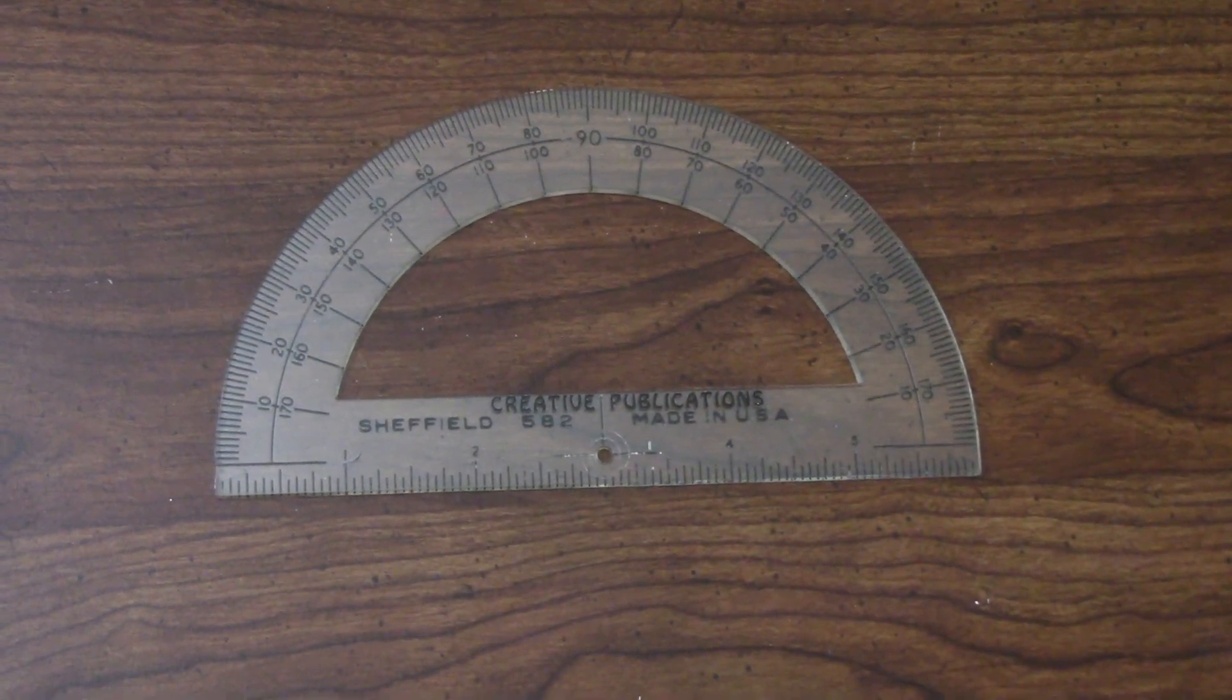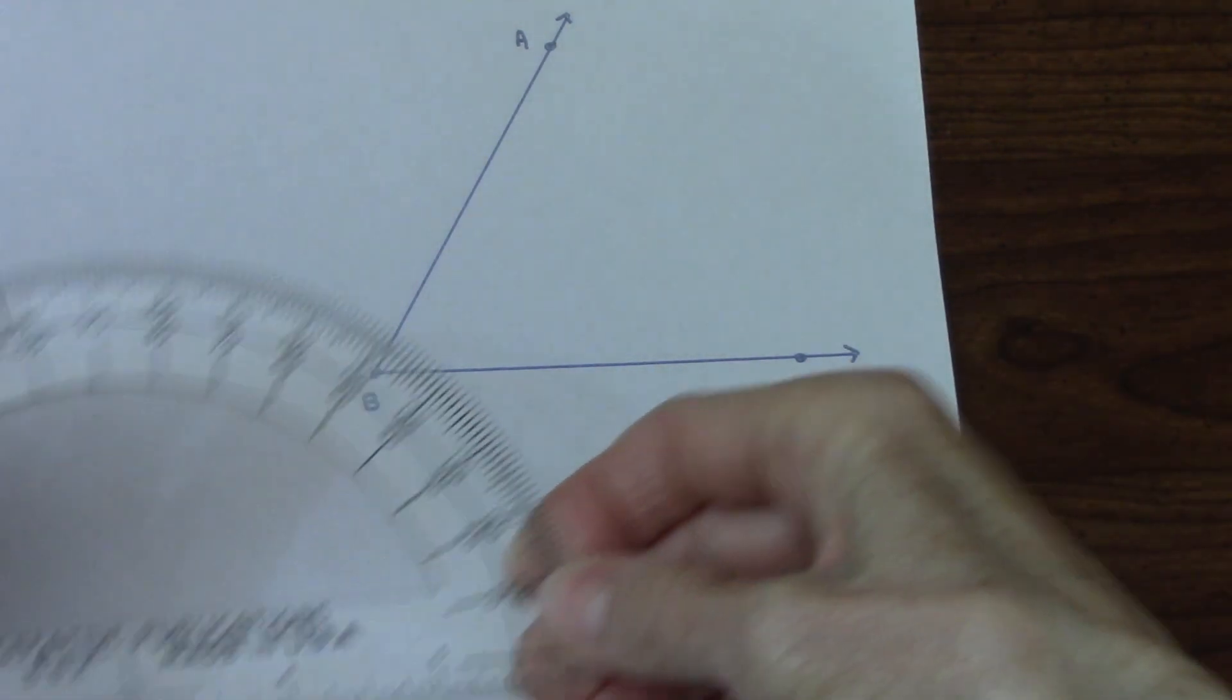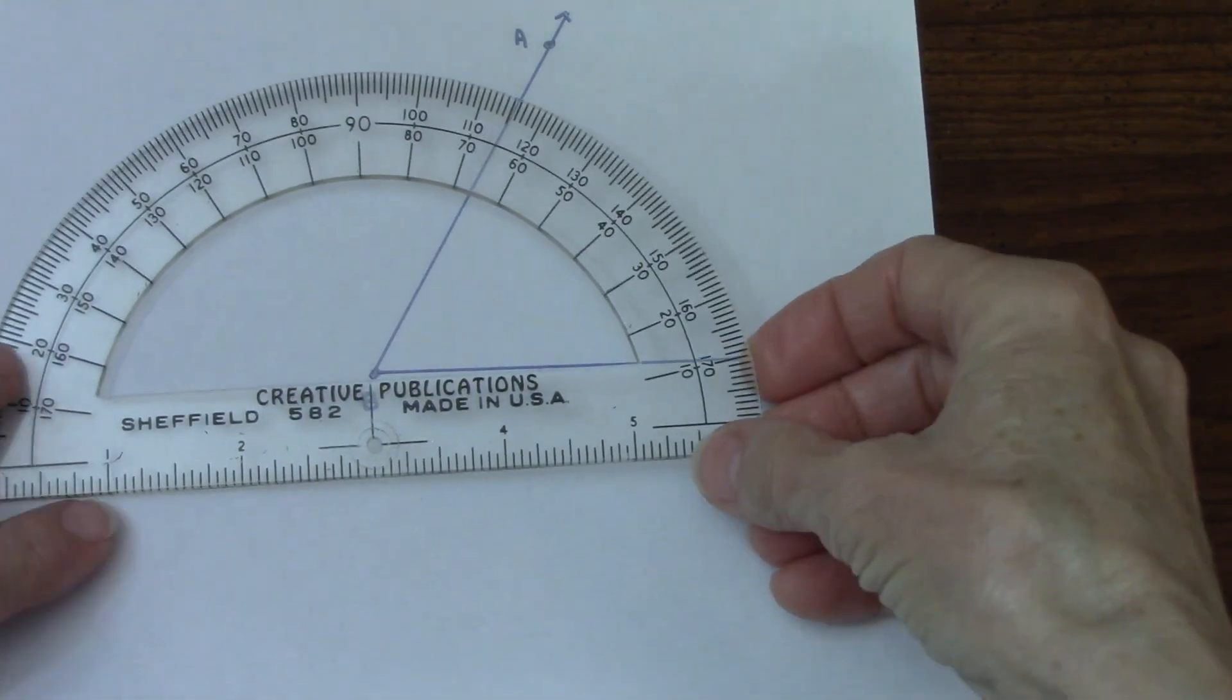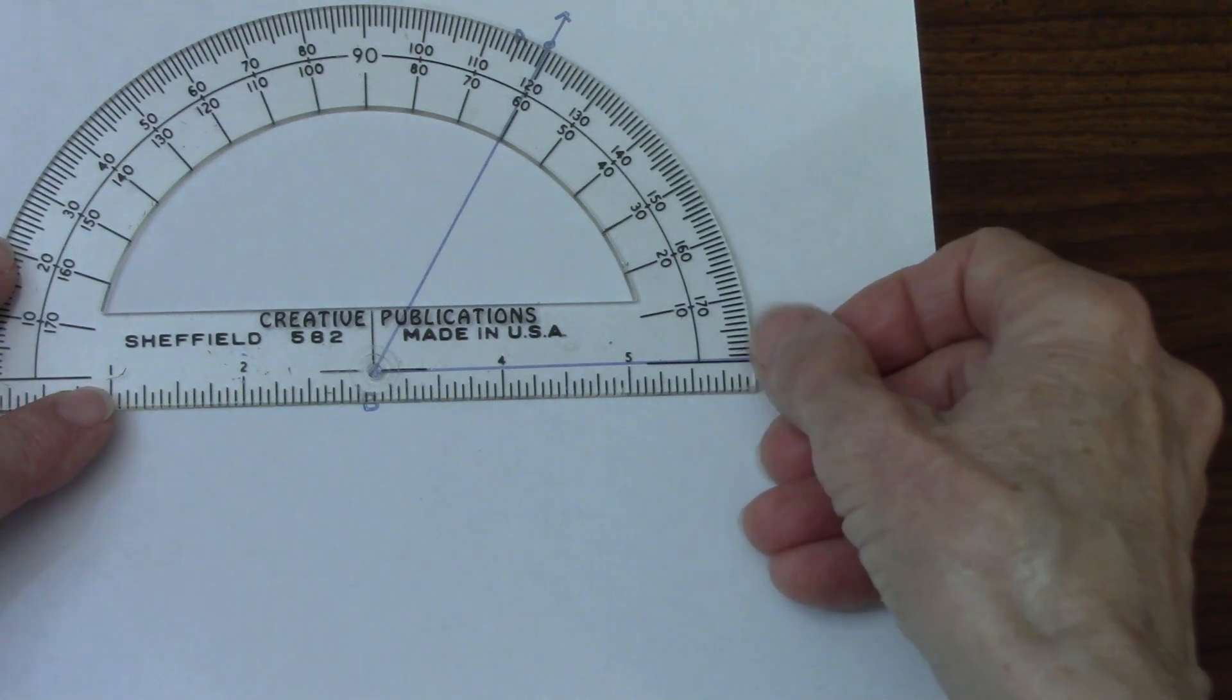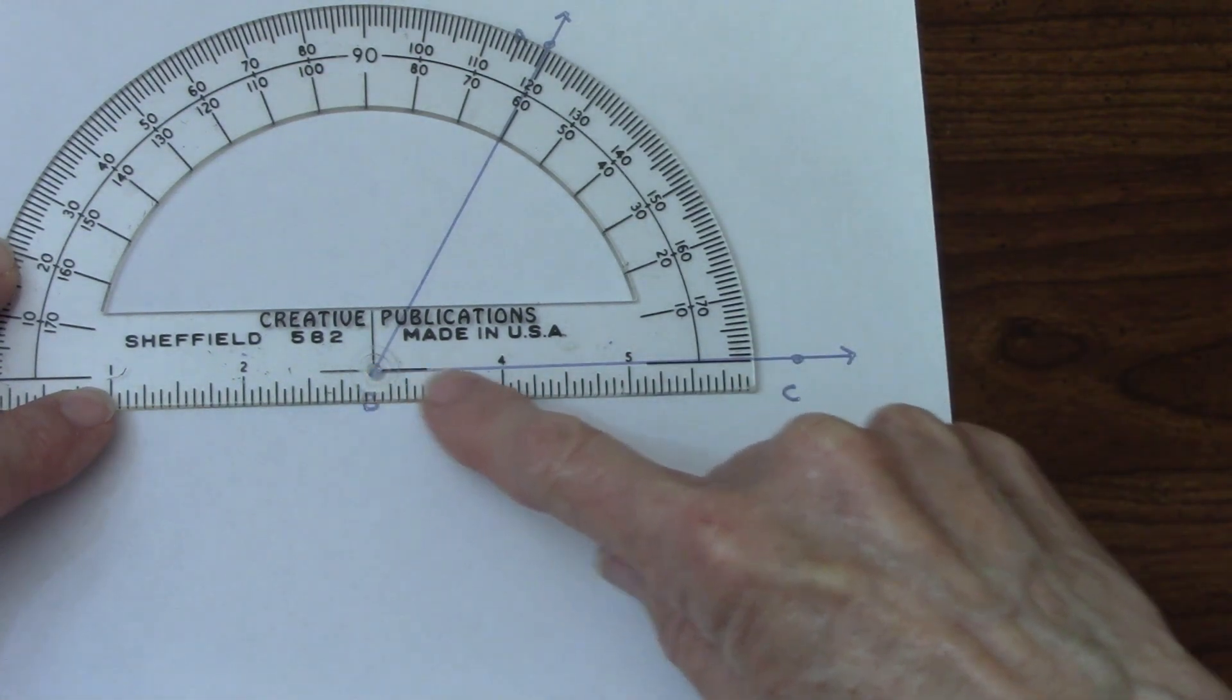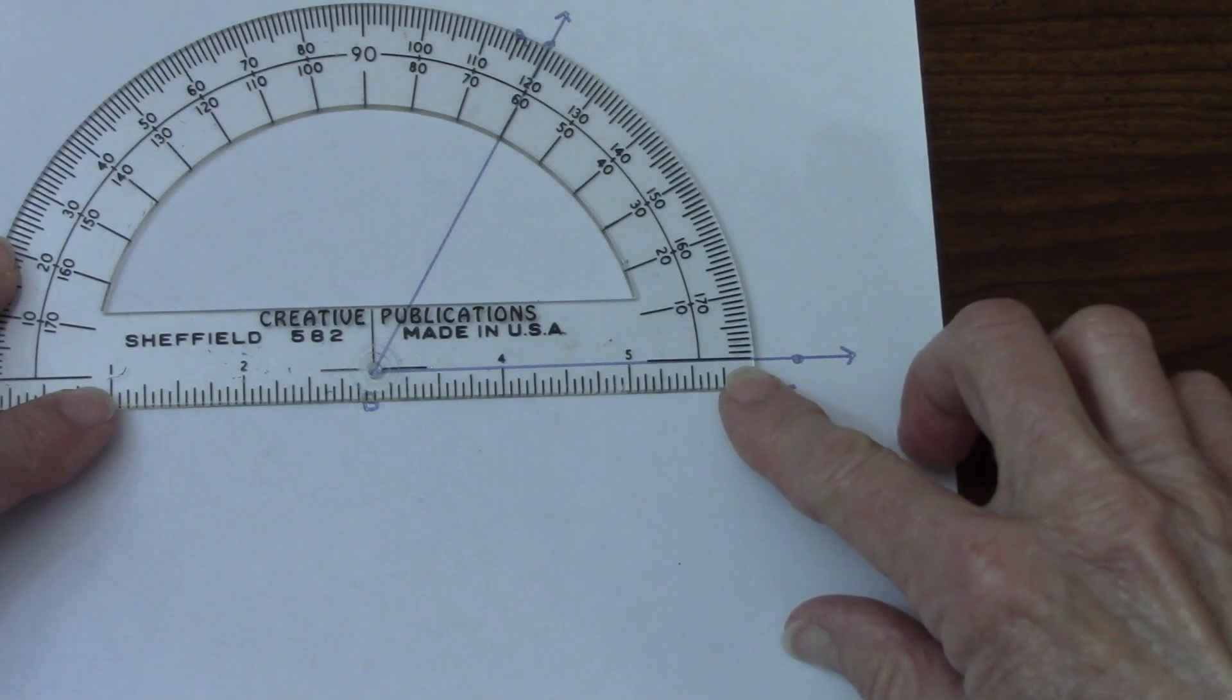I'll show you how we use it. Here is the angle ABC that I'm going to measure. I'm going to take my protractor and put the circle at the center right on vertex B. Then I'm going to line it up along the ray at the bottom right here.